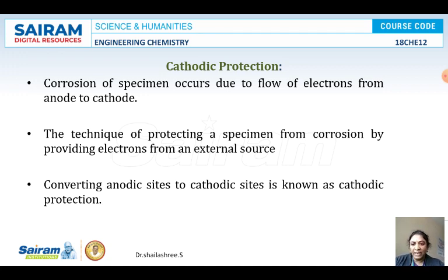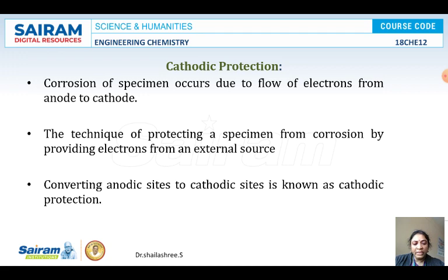When two metals are in contact with each other, one anode and one cathode, the anode undergoes oxidation with liberation of electrons and gets corroded, and the cathode undergoes the reduction reaction and is protected. Then why is this method referred to as cathodic protection?